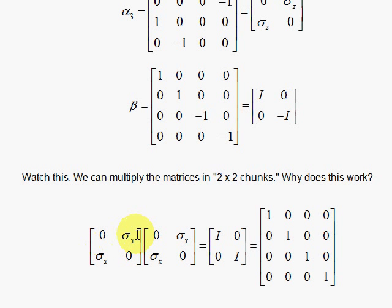0, 2-by-2 matrix times 0, 2-by-2 plus sigma x times sigma x is 0 plus sigma x squared. Sigma x squared is the identity. 0 times sigma x plus sigma x times 0 is 0.